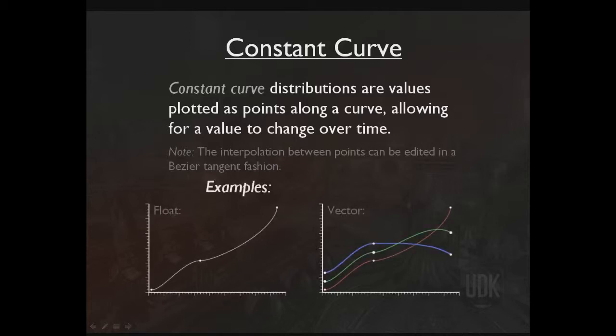Constant curve distributions are values plotted as points along a curve, which allow for a value to change over time. It's important to note that the interpolation between these points can be edited in a Bezier tangent fashion. There's a curve editor inside the Cascade particle editor we can use to edit these curves. For the float value, we have a single number graphed between three points that slowly sweeps up. For the vector, we have three curves that are separated — though curves won't always be separated like this; they've just been pulled apart for the example.